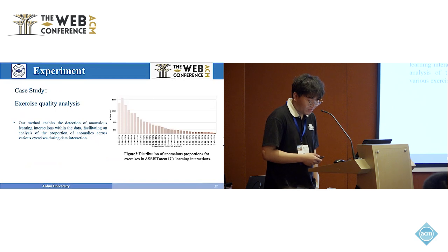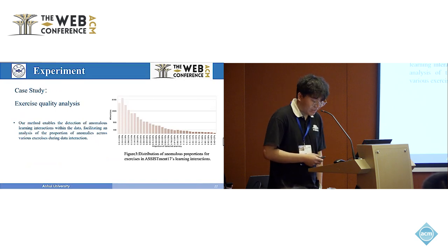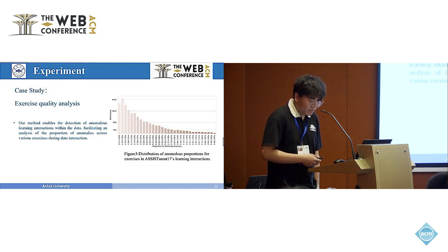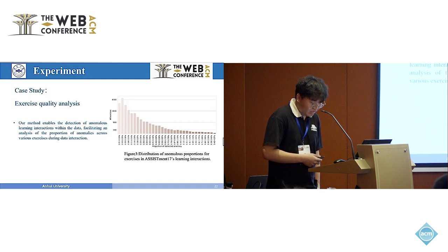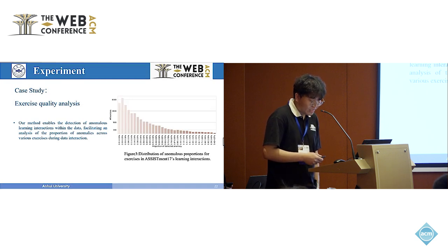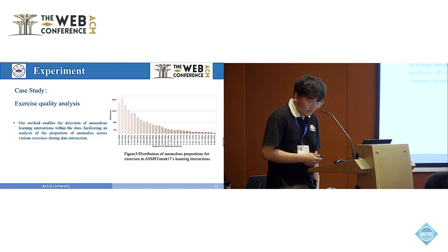In online learning systems, an important task is to evaluate the quality of exercises, since high-quality exercises can more precisely trace students' knowledge states. Our method enables detection of anomalous learning interactions within the data, facilitating analysis of the proportion of anomalies across various exercises. This result can serve as a basis for exercise quality analysis, whereby exercises detected with a higher anomaly rate can be revisited and reviewed by domain experts.